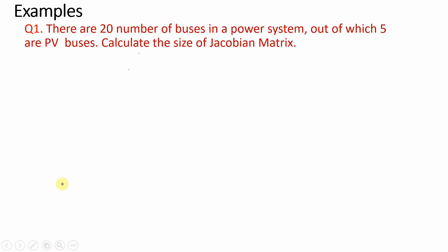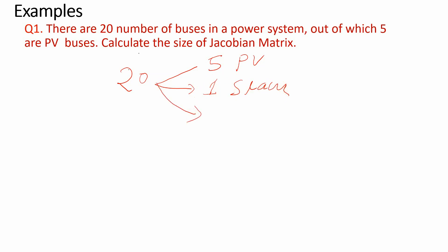Now the first question: there are 20 buses in a power system out of which 5 are PV buses. My task is to select a slack bus. Can I select the slack bus from the 5 PV buses? No, I can only select from generator buses. Since generator buses are not specifically mentioned here, I select one slack bus from the total number of buses. Remaining PQ buses = 20 − 1 − 5 = 14.